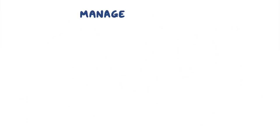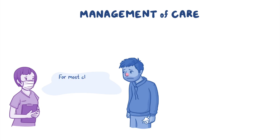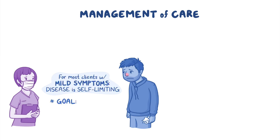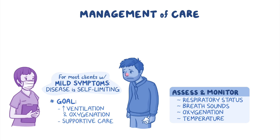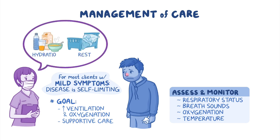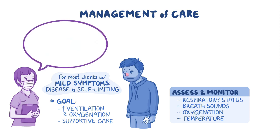Let's look at the nursing care you'll provide for a client with influenza. For most clients with mild symptoms, the disease is self-limiting, so the goal of nursing care is to improve ventilation and oxygenation and to provide supportive care. First, you should regularly assess their respiratory status and breath sounds and monitor their oxygenation and temperature. Be sure they receive adequate rest and hydration. You can encourage them to take deep breaths to improve oxygenation and cough to help clear the airways.